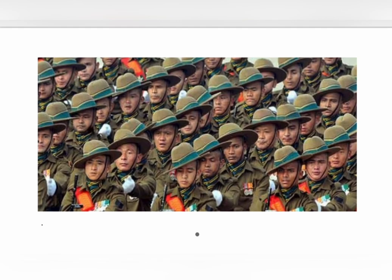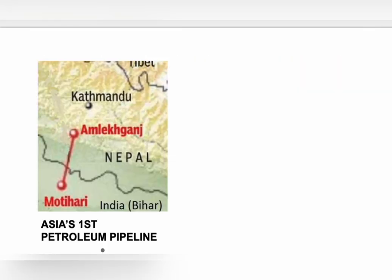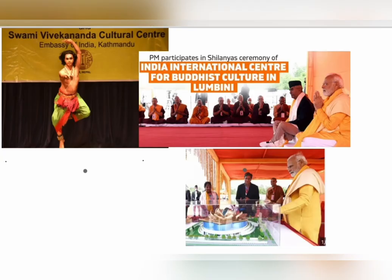For meeting the electrical needs of border areas, a Power Exchange Agreement of 1971 was enacted. South Asia's first cross-border petroleum pipeline was constructed between Motihari in India and Amlekganj in Nepal, funded by Indian Oil Corporation Limited in 2019. To promote cultural significance, a Swami Vivekananda Center for Indian Culture was set up in Kathmandu, and the India International Center for Buddhist Culture and Heritage was inaugurated in Lumbini, Nepal.